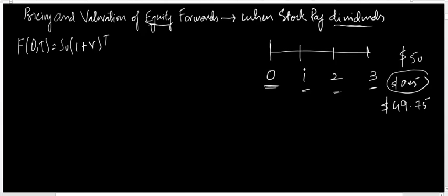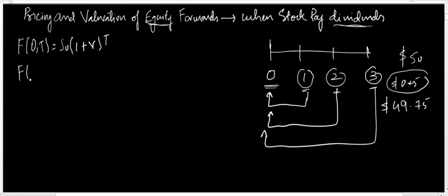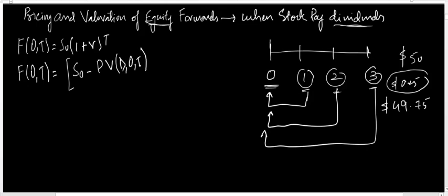If the stock is paying a dividend at multiple time periods, we need to discount those cash flows and then subtract from the spot price. All cash flows occurring at each time period need to be discounted back and subtracted from the current spot price. The forward price of an equity forward contract paying dividends must be adjusted for the present value of dividends from time zero to maturity, multiplied by (1 + r) raised to power t.